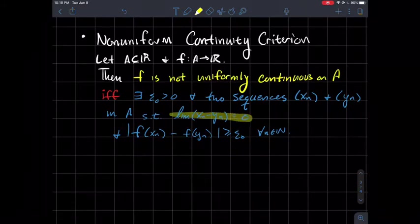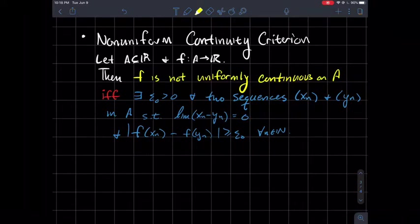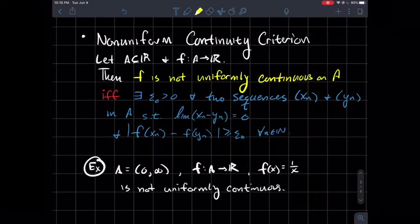This says that x_n and y_n get arbitrarily close to each other. These two sequences are getting closer and closer to each other, the bigger that n gets. But the outputs are always bounded below by epsilon_0. What you'd like to have happen is that these outputs should get close to each other, but they don't. They never get within epsilon_0 of each other for every point in there.